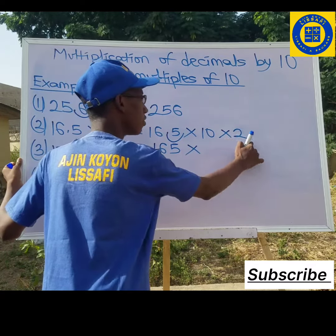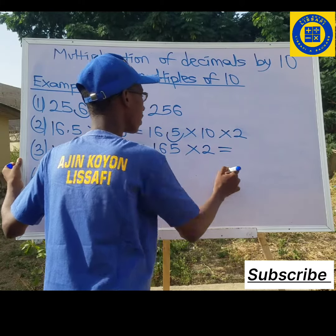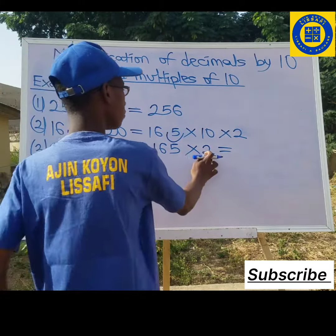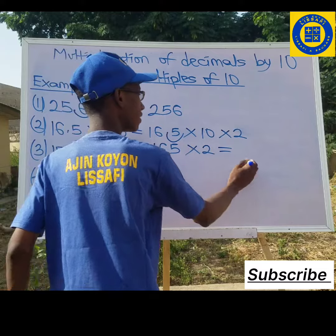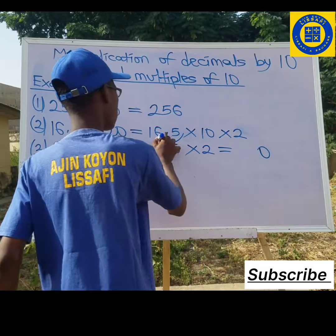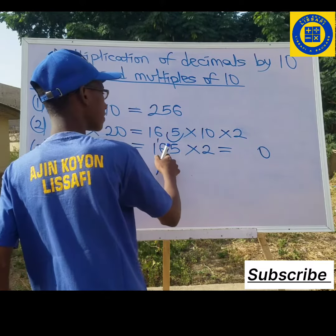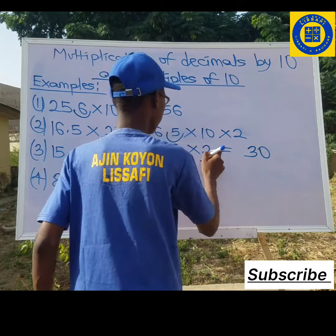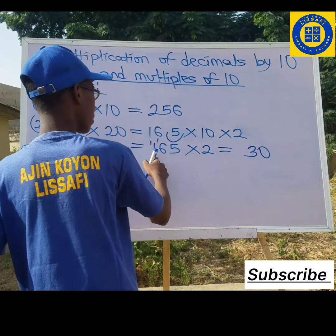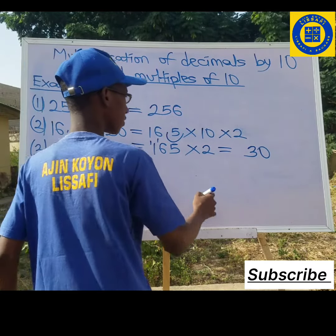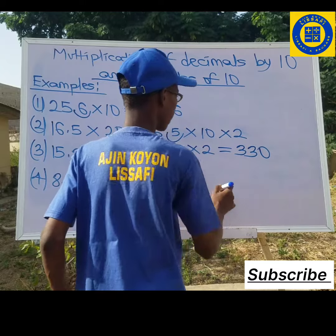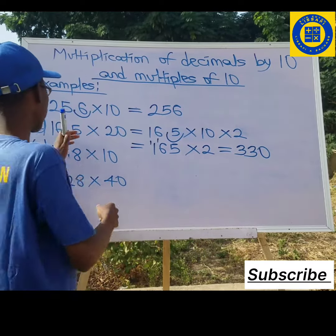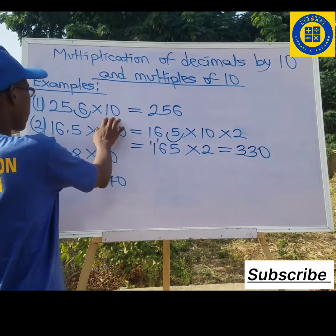Multiplied by 1 on 2, din de sawara. So 165 times 2: 2 times 5 is 10, write down 0, carry 1. 2 times 6 is 12, plus 1 is 13, write down 3, carry 1. So 2 times 1 is 2, plus 1 is 3. So muna da 330.